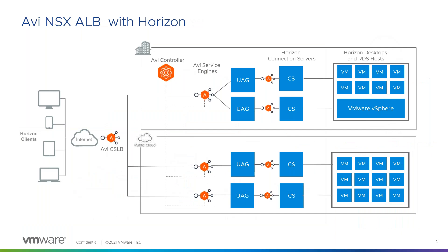Switching gears to Horizon — we'll be doing a demo of these capabilities after the slides. In the case of Horizon, Avi provides a full-stack feature set for load balancing services. I've shown two sites: one on-premises and one public cloud, which could be Azure, VMC, or AWS. We do load balancing for the UAGs, for the connection servers, and for app volumes as required. We also do GSLB, so if you have multiple sites you can use Avi as a global load balancer to have active-active, active-standby, or weighted load to various sites as you would like.